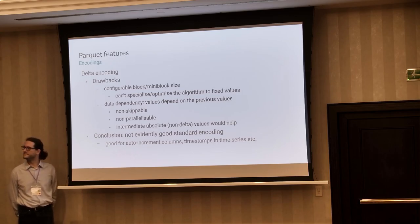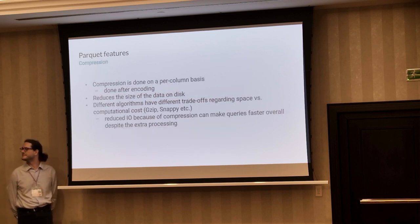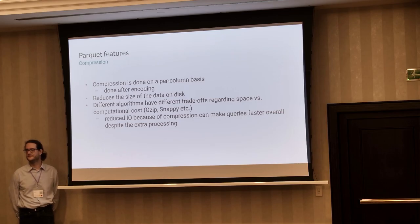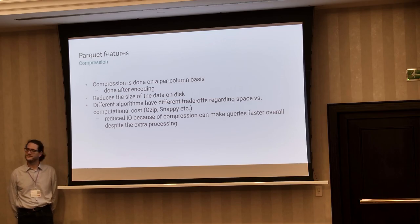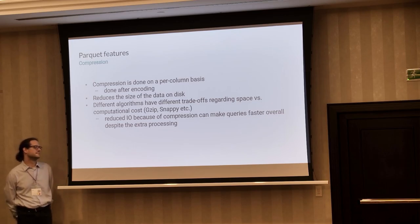Delta encoding is really good for some specific but very common use cases, such as auto-incrementing columns or timestamps in a time series. Compression is also supported by Parquet and it comes after encoding. The goal is to reduce the data size on disk. Parquet supports different algorithms, so you can trade off space against computational cost.